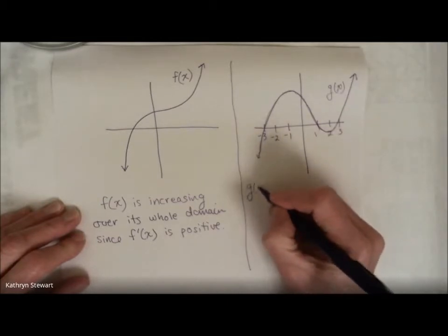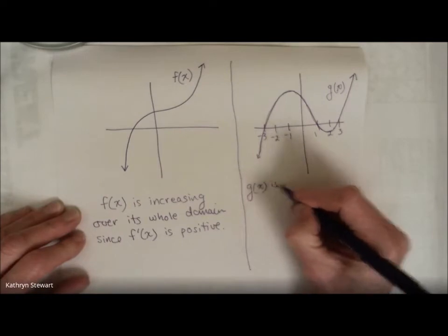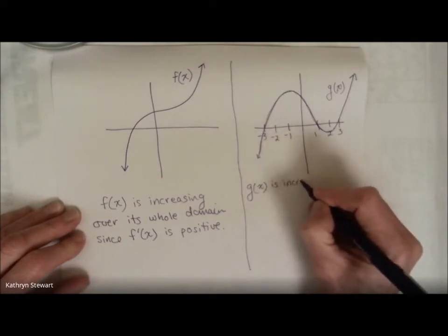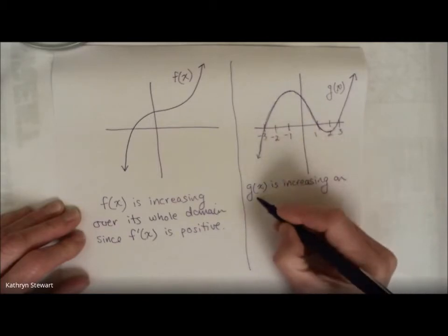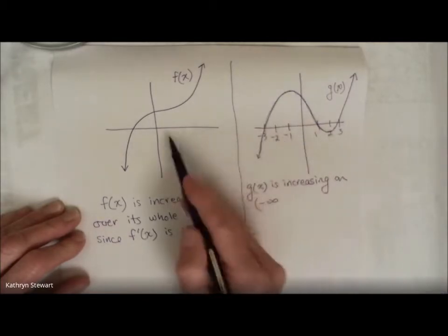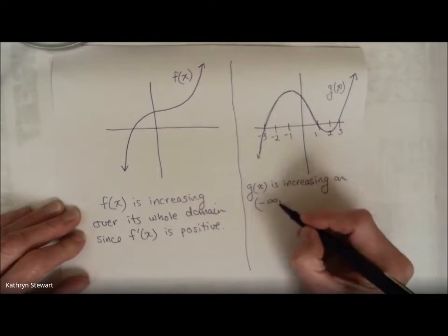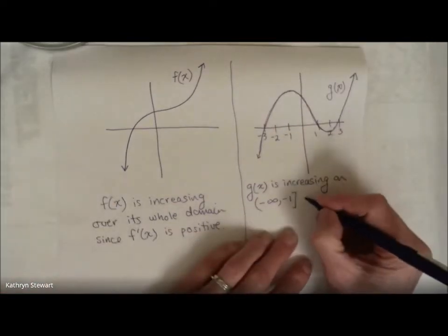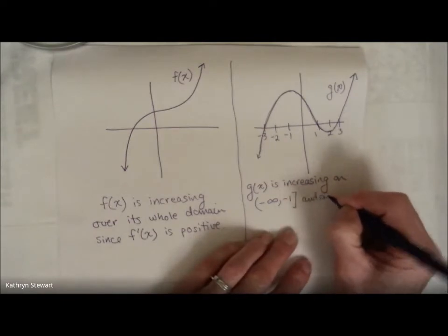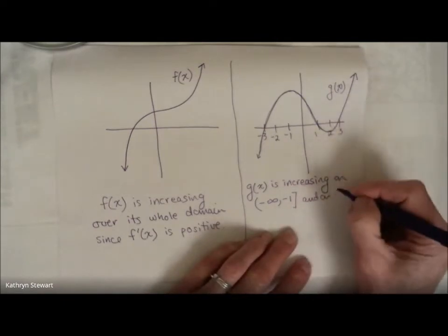So I would say g of x is increasing on, and let's use interval notation. So from negative infinity to negative one, and on, looks like when x is two, to positive infinity.